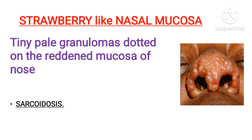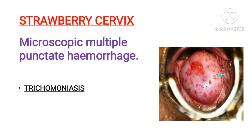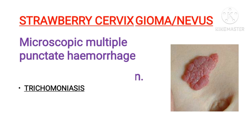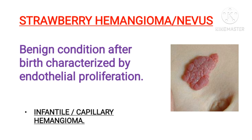Next is strawberry cervix, most commonly seen in trichomoniasis — a protozoan infection that develops within four days to four weeks. There is multiple punctate hemorrhage which, when seen through the microscope, resembles a strawberry. The vaginal and cervical mucosa typically has a fiery red appearance with marked dilation of cervical mucosal vessels, resulting in the appearance of the strawberry cervix.